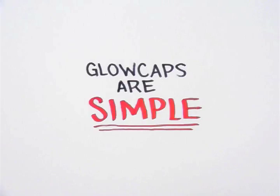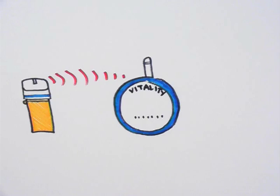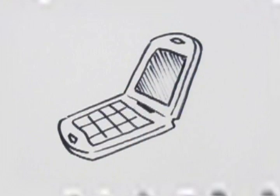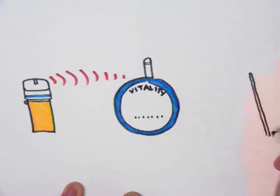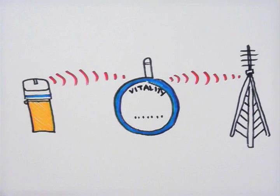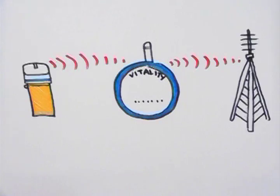Glowcaps are simple. Like a cordless phone, Glowcaps talk wirelessly to a companion nightlight up to 50 feet away. Inside the nightlight are the guts of a cellular phone. The nightlight connects to the nearest AT&T cell phone tower so Glowcaps can communicate with your pharmacy.